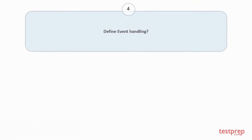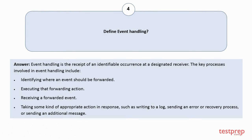Question number 4: Define event handling? Event handling is the receipt of an identifiable occurrence at a designated receiver. The key processes involved in event handling include: 1. Identifying where an event should be forwarded. 2. Executing that forwarding action.